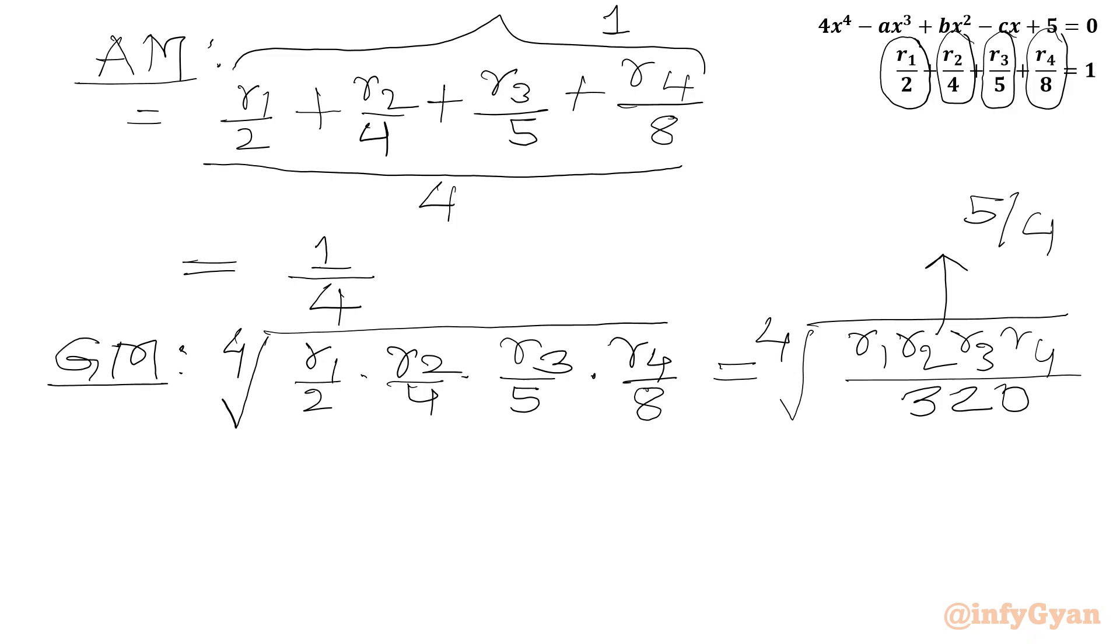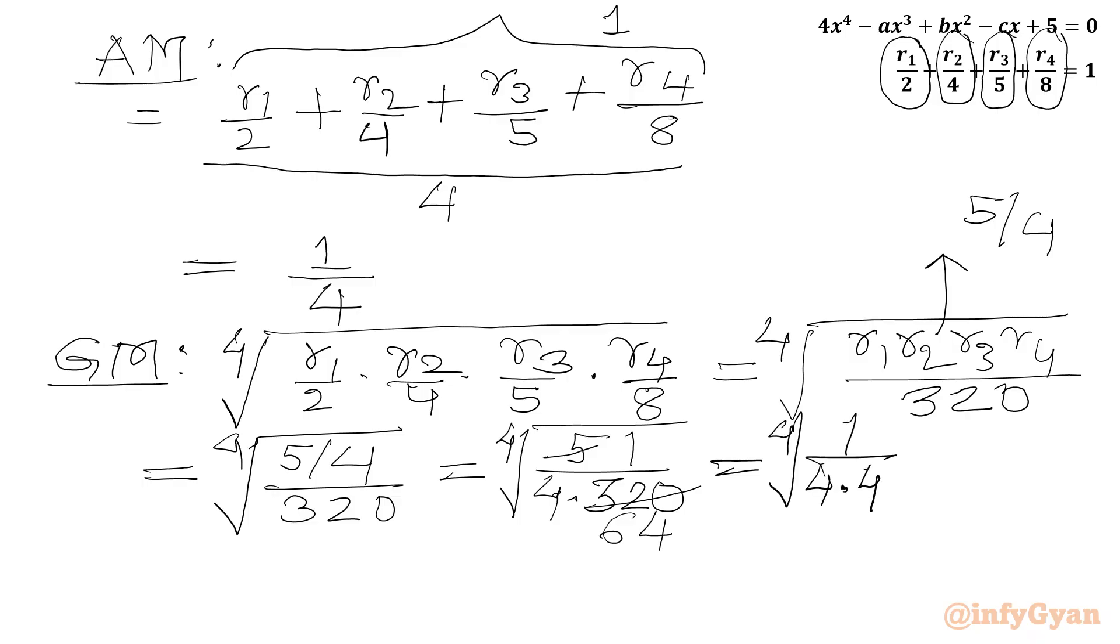So we can write GM equal to fourth root of R1R2R3R4 over 320, which will be equal to fourth root of 5 over 320. Now we can cancel numerator 5, denominator 320 and write 64, equal to fourth root of 1 over 4 times 64 is 4 cubed.